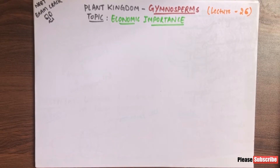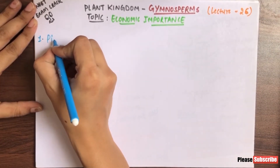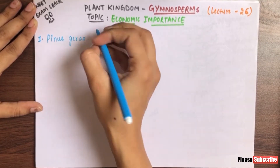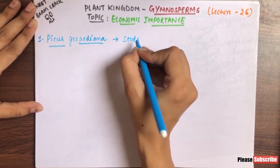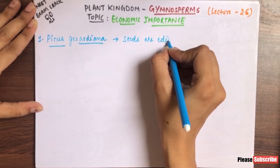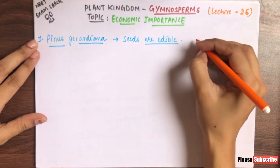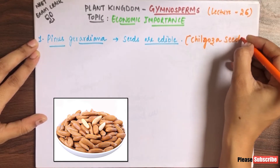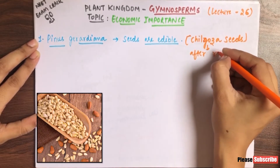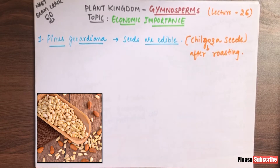Look at the economic importance here. The first point is that Pinus gerardiana — this species — its seeds are edible. What we call the seeds are Chilgoza seeds. Chilgoza seeds are basically from this plant, and they are edible after roasting. So the first economic importance is Pinus gerardiana — it is edible, and its seeds are called Chilgoza seeds.